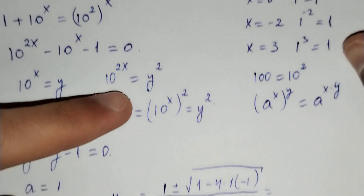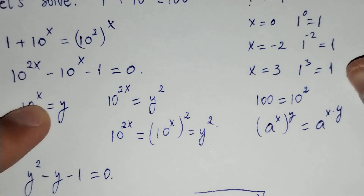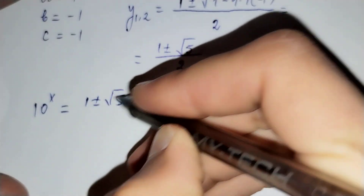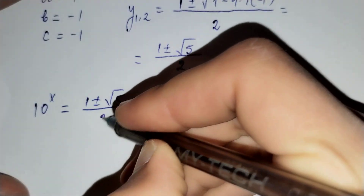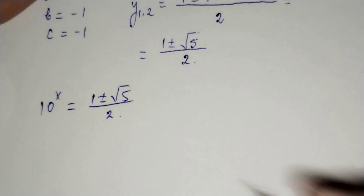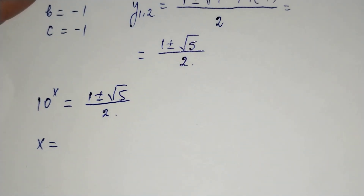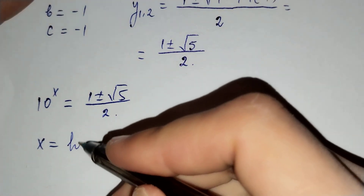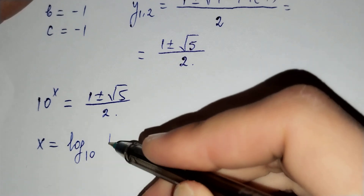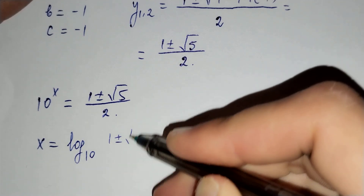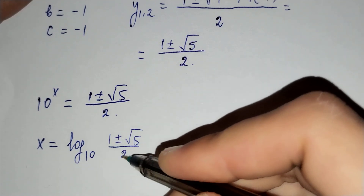These are our y₁ and y₂. Since y equals to 10 power x, we have: 10 power x equals to 1 plus or minus square root of 5, over 2. Therefore x equals to log base 10 of 1 plus or minus square root of 5, over 2.